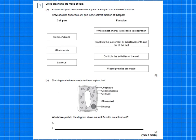Here is an exam question for you to look at. This question says that living organisms are made of cells and animal and plant cells have several different parts and they have different functions. Function means what is their job, so what do they do? It says draw one line from each cell part to the correct function. So from here to here and only one line for each. So this is a straightforward recall question.